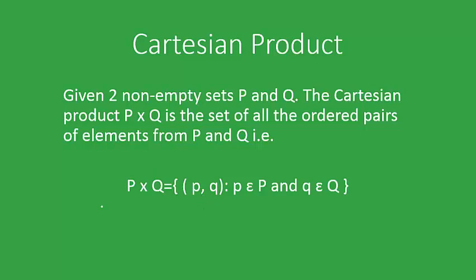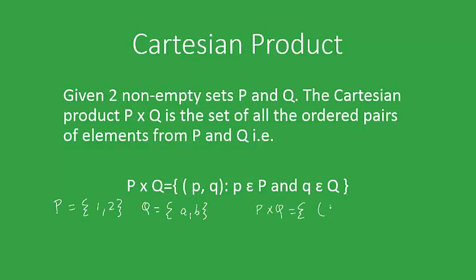Let's look into an example in which set P is equal to {1, 2} and set Q is equal to {A, B}. The Cartesian product will be equal to the set containing the elements (1, A), (1, B), (2, A), (2, B). This complete set is P cross Q.